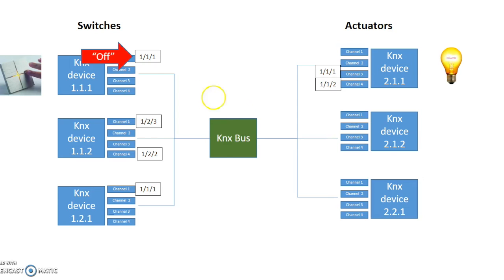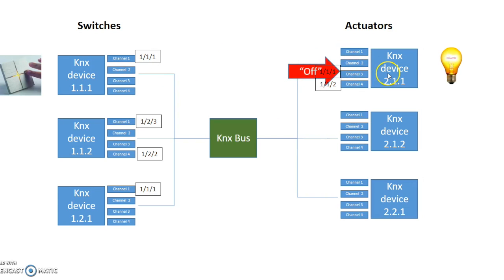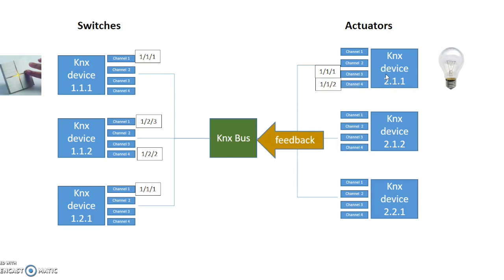If you want to switch it off, an off-value is sent to the group address, which again travels through the bus to channel 3, turns off the light, and feedback comes back to confirm everything is switched off. That's fundamentally how KNX works: we have devices, each device has a programming address, each device has a series of channels to which group addresses can be assigned, and all that happens is an exchange of information between the switches and actuators, all linked by those group addresses.